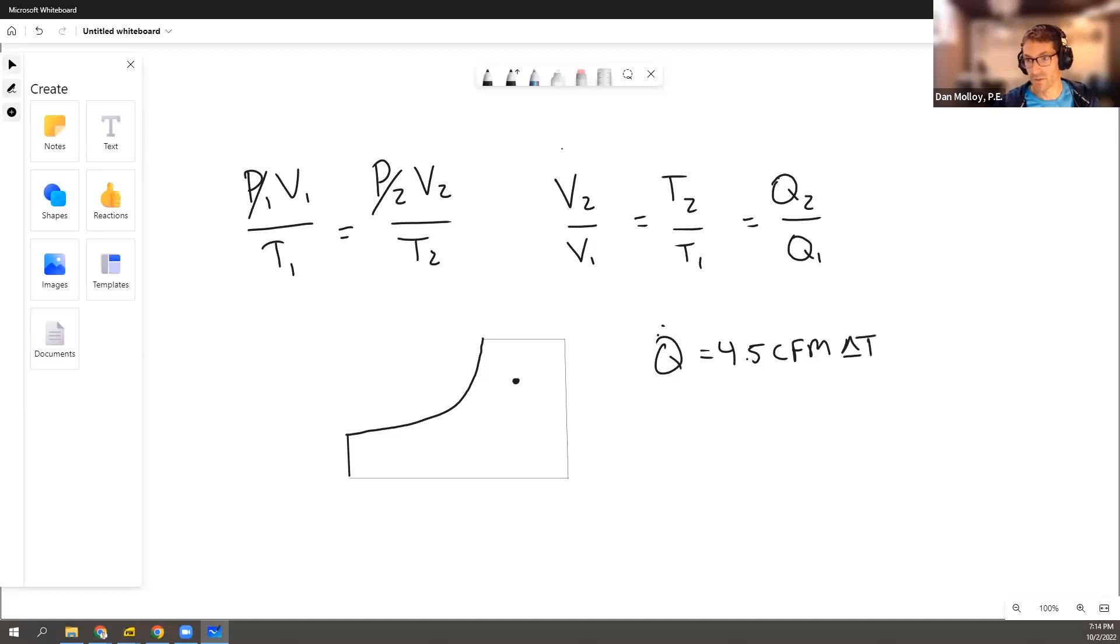And the answer is, you can usually use the rule of thumb, but you can't when the density or the specific volume, which is the reciprocal of the density, deviates too much from the assumption.